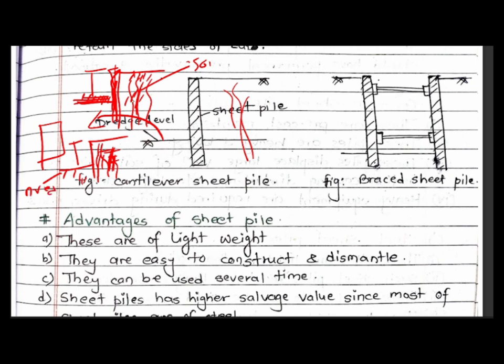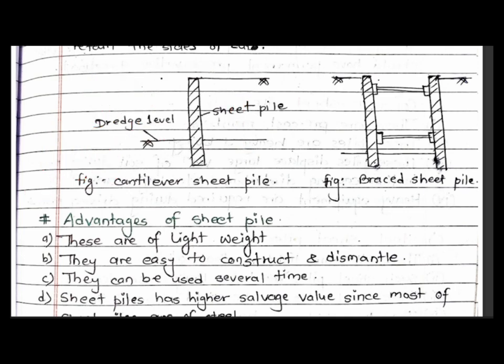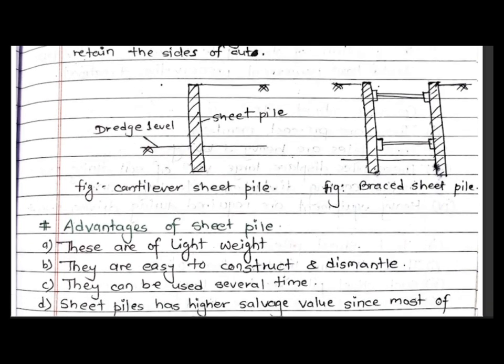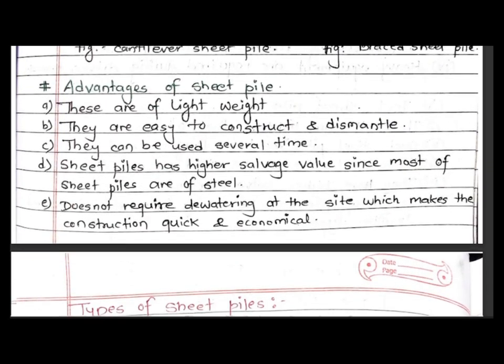We have active earth pressure and passive earth pressure that need to be balanced. Now we come to cantilever sheet pile and braced sheet pile types.